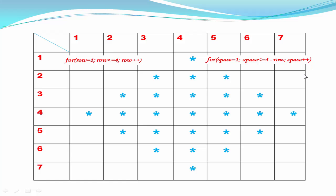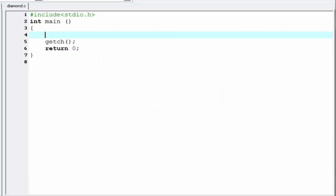Our next task is to print stars. Stars are printed using the logic two times row minus one. For the first row: two times one minus one means print one star. For the second row: two times two minus one equals three, so print three stars. For the third row: two times three minus one equals five, so print five stars. We write the loop as: for column equal to one, column less than or equal to two times row minus one, then increment column by one.